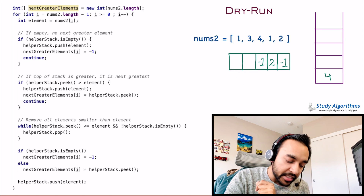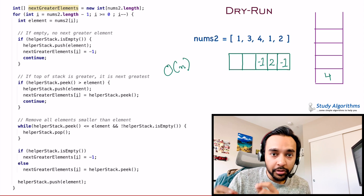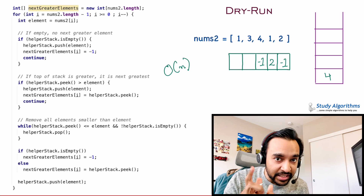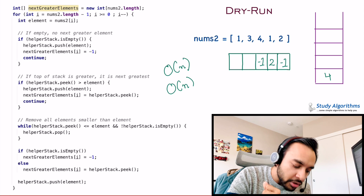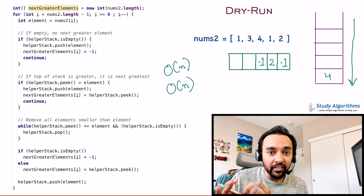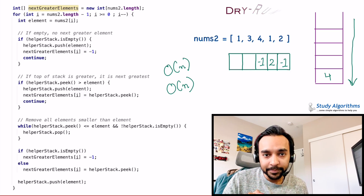The time complexity of this solution is O(n), because you go through the entire array only once. The space complexity is also O(n), because the stack can have a maximum of n elements.